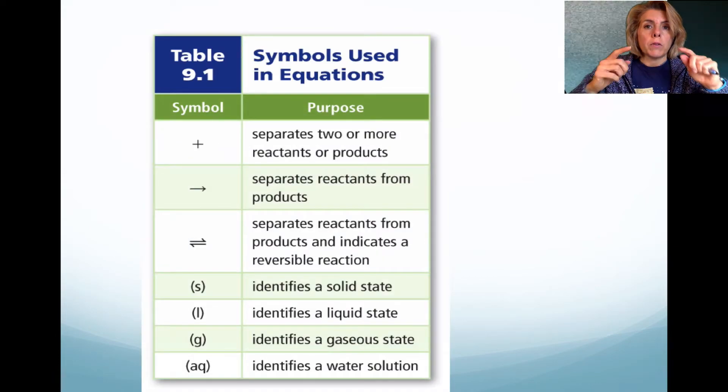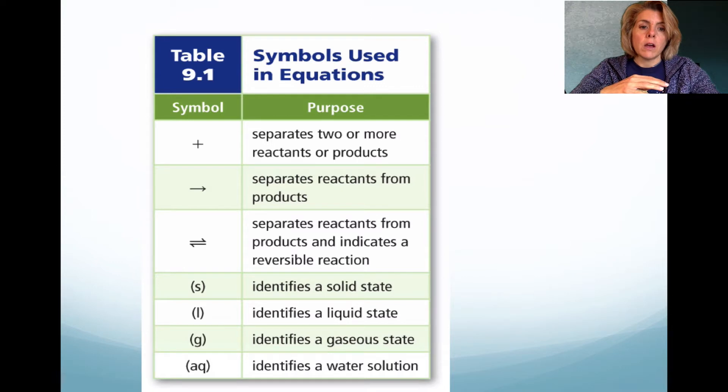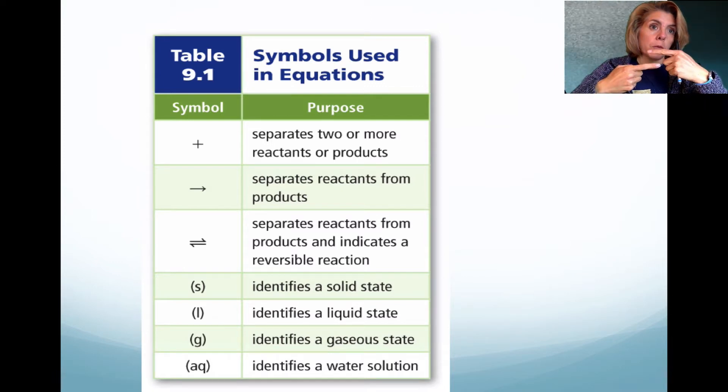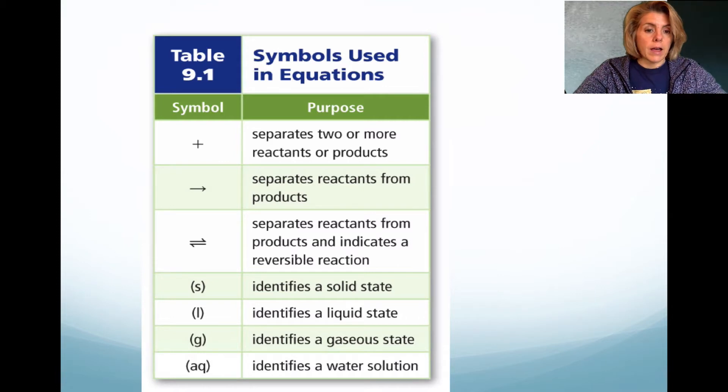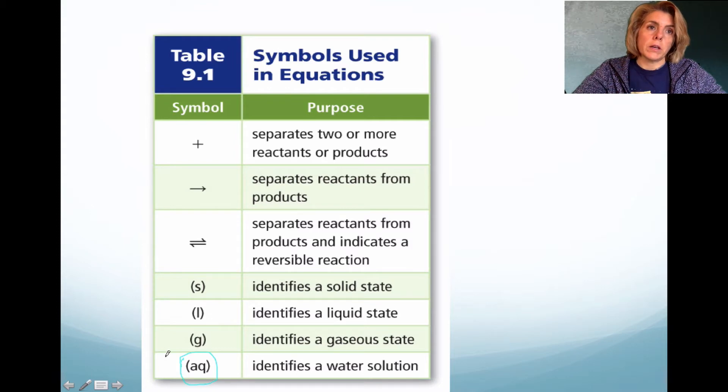So you have the plus sign. The plus sign takes one reactant and combines it with another. The arrow tells you that there's some kind of chemical change. You could have reversible, and we will look at that eventually. If you have an S, we're talking about a solid. L, a liquid. G, a gas. Or this is something that a lot of students don't realize that they have to put after a chemical formula is the AQ symbol. That is something that is dissolved in water.